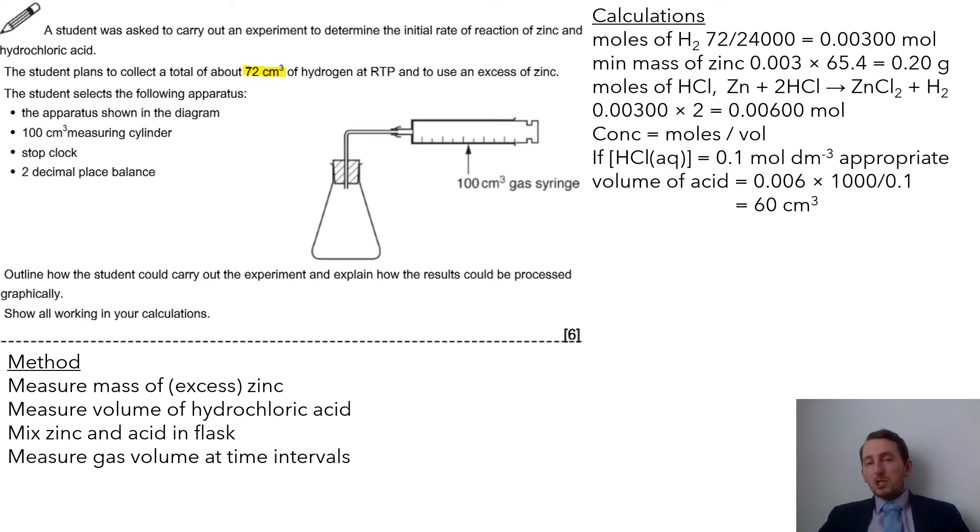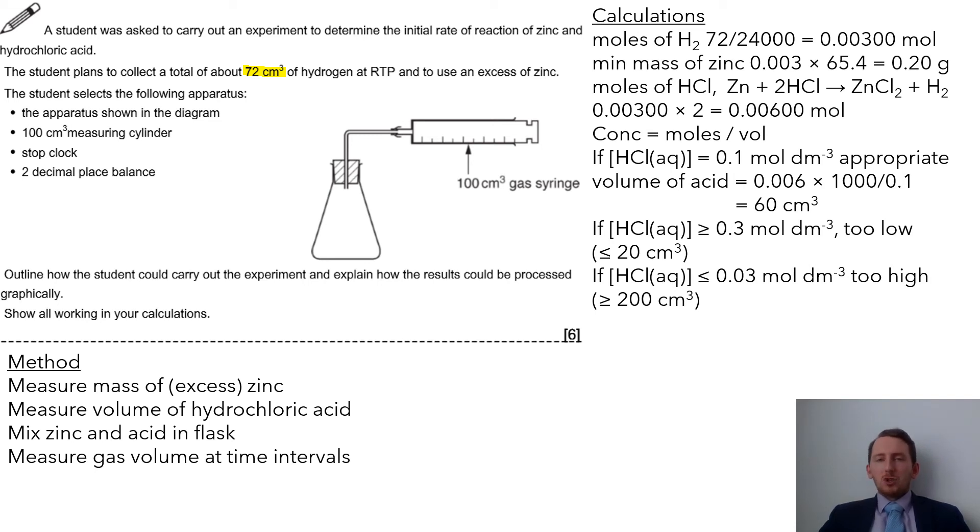What I can do is rearrange my equation to give me volume as my concentration divided by my moles. I can take my moles and I've done a bit of a rearrangement there. Instead of dividing by 0.1 divided by a thousand, I'll then flip that to get my conversion back to centimeters cubed. It'd be 60 centimeter cubed of acid. That seems somewhat reasonable amount of acid to use. They've then also gone on for some assumptions saying that if concentration was say greater than or equal to 0.3, my volume would be quite low. Whereas if it was say less than 0.03, it'd then be too high, and they just put some assumptions in there with that question.